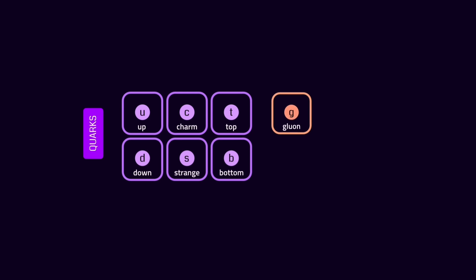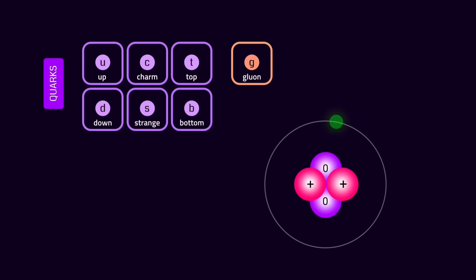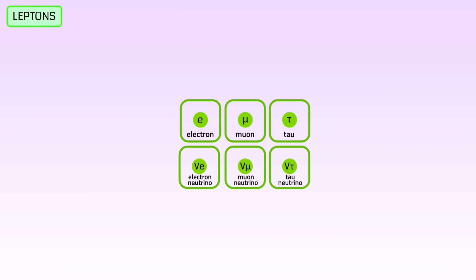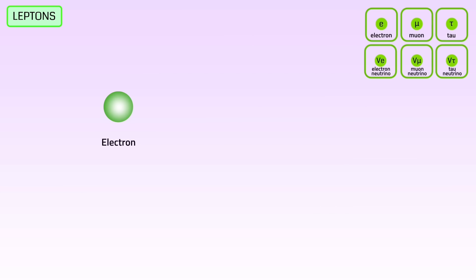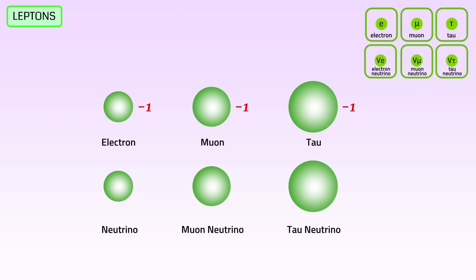So far, we've looked at quarks, gluons, and the strong force, which are responsible for creating the nucleus of the atom. However, an atom contains both a nucleus and electrons. So what is an electron? In the standard model of particle physics, in the group of fermions, there is another family called leptons. This family includes the electron among a total of six particles: the electron, the neutrino, and their next-generation particles. Electrons have a charge of negative one, while neutrinos have no charge.